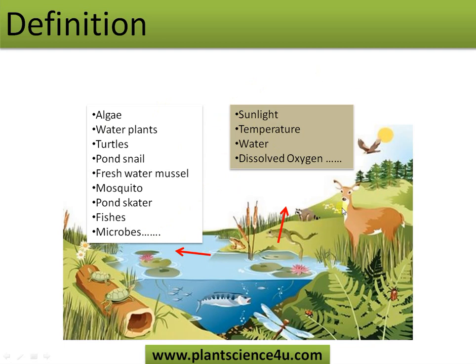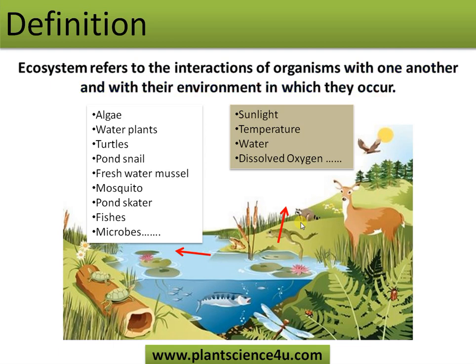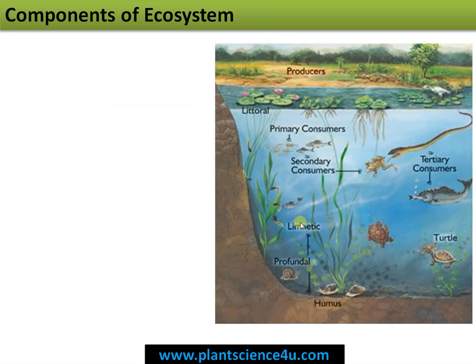All these living beings are interacting with each other directly or indirectly, and also interacting with all these physical components or physical factors like sunlight, temperature, water, and dissolved oxygen. Therefore, an ecosystem refers to the interactions of organisms with one another and with their environment in which they occur.